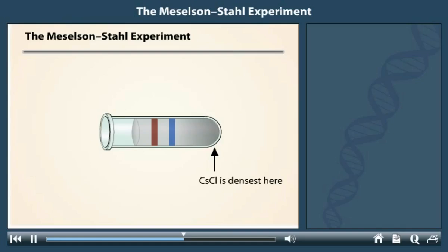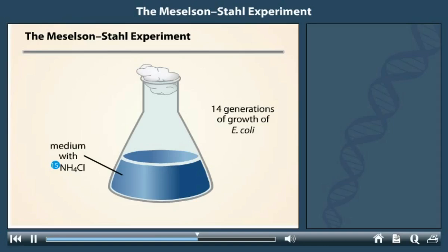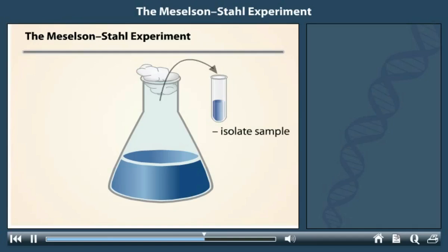With their technique of separating heavy versus light DNA established, the scientists tested the hypothesis of semi-conservative replication. They first grew E. coli for 14 generations in a medium with N15 in the form of ammonium chloride as the sole nitrogen source. Growing the bacteria for many generations ensured that all the DNA would be labeled with heavy nitrogen. At this time, they isolated their first bacterial sample, prepared the DNA, and added the caesium chloride for centrifugation.